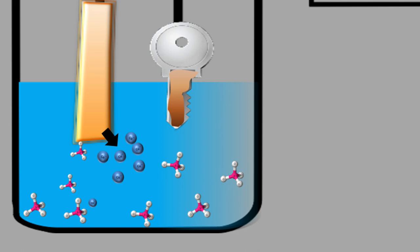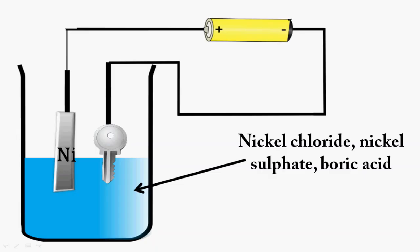This way we can get nickel plating. To get nickel plating on a key, we use a piece of nickel instead of copper as the positive electrode and we use a nickel compound as electrolyte like nickel chloride or nickel sulfate. These are very easily available.